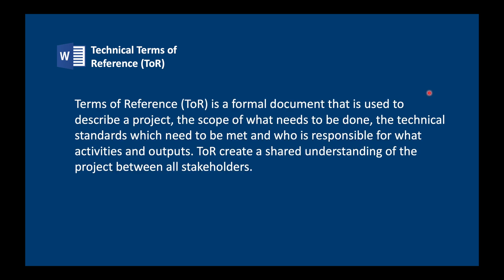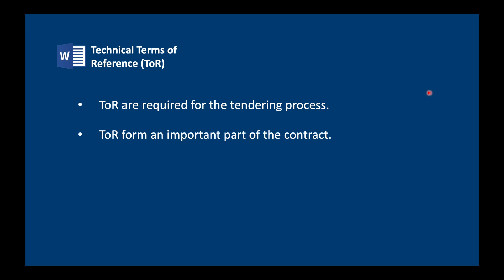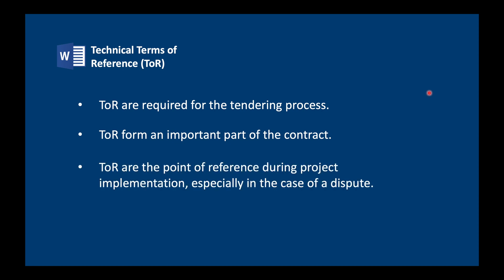Let's start with the technical terms of reference, otherwise known as TOR. TOR is a formal document used to describe a project, the scope of what needs to be done, the technical standards which need to be met, and who is responsible for what activities and outputs. TOR creates a shared understanding of the project between all stakeholders. They're very important both during the tendering process and during project implementation — especially as a point of reference if there is a dispute.